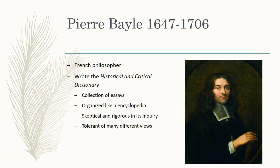The last man we're going to look at before the heart of the Enlightenment is Pierre Bayle. He was a French philosopher who at one time was a Huguenot and at another time a Catholic. What he is best known for is writing what was called the Historical and Critical Dictionary, which he wrote in 1697. He added a second edition in 1702, and it was translated into English in 1709.